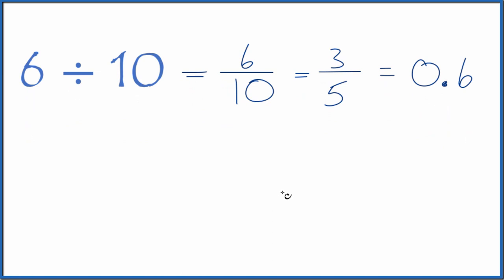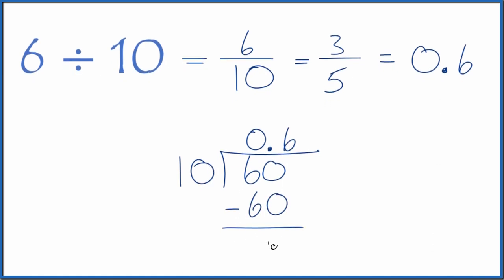We can also do this longhand. We could say we have 6, and we want to know how many times 10 goes into 6. 10 doesn't go into 6, so let's put a zero with a decimal point and make this 60. Now, 6 times 10, that's 60, we subtract, no remainder.